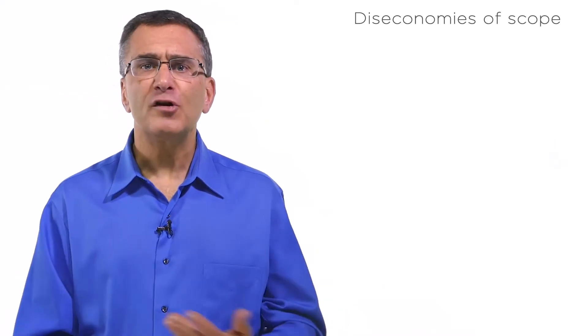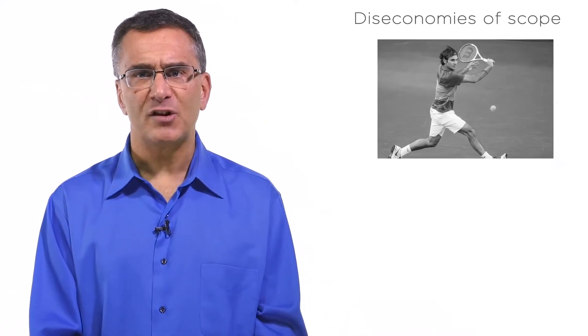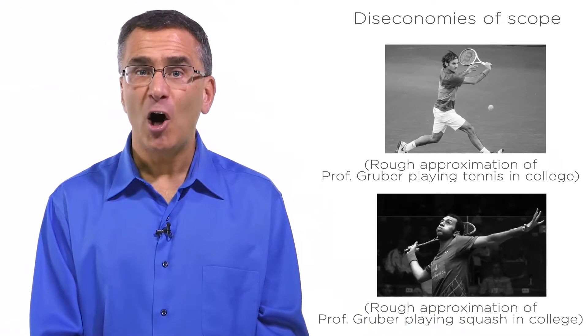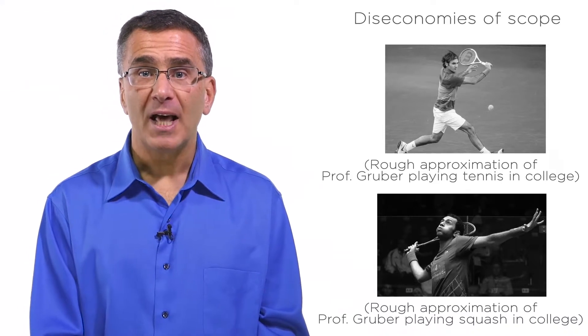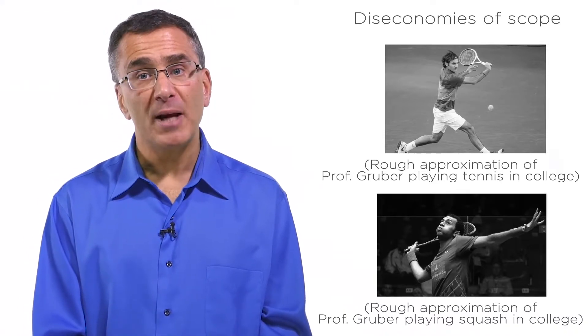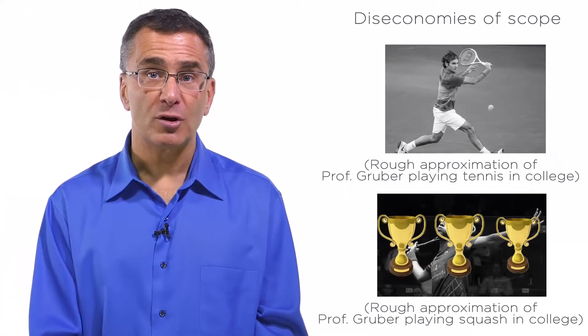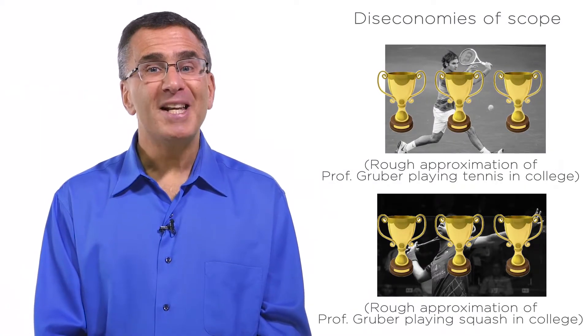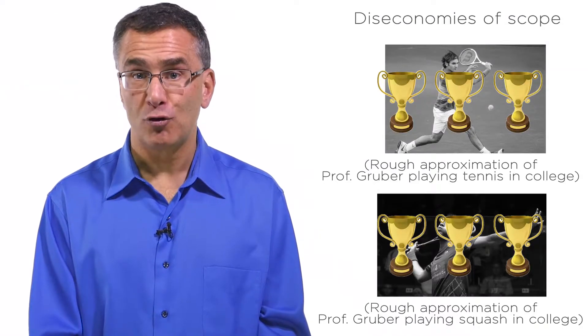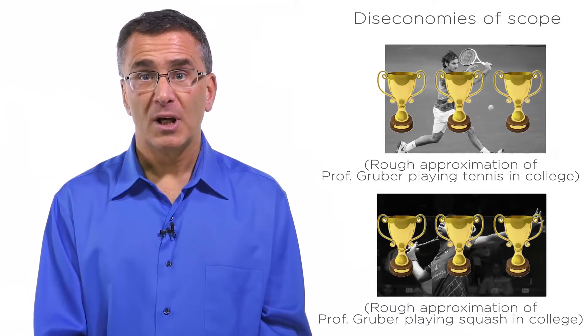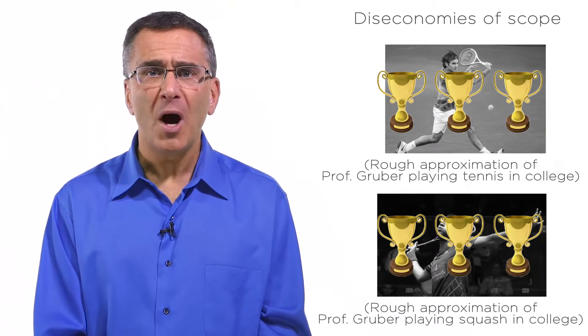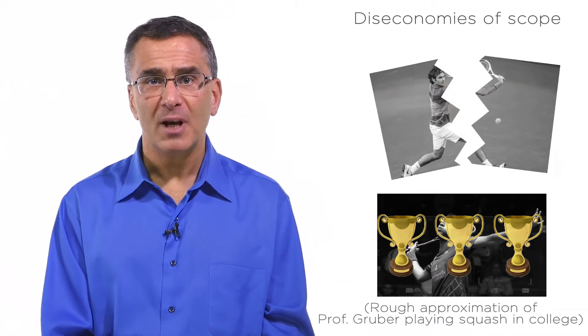Now we can also have diseconomies of scope. For example, when I was in college, I was on the tennis team. At one point, I decided to try playing squash as well. I hoped that this would add economies of scope and I'd be better at both. By playing more tennis, I hoped I'd get better at squash, and by playing more squash, I hoped I'd get better at tennis. But in tennis, it's important not to use your wrist when you stroke the ball. In squash, however, it turns out that it's all about using your wrist. By playing squash, I actually messed up my tennis game and vice versa.